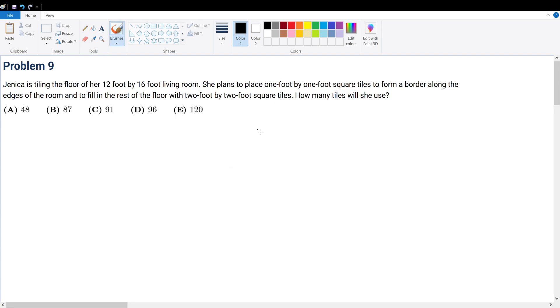First of all, are all the units correct? We have a 1 by 1 foot and then in the middle we have a 2 by 2 foot. So yes, the units all check out. Let's first understand how this might look like. We have a living room, not drawn to scale obviously. That's 16 feet and this is 12 feet. Always check for units.